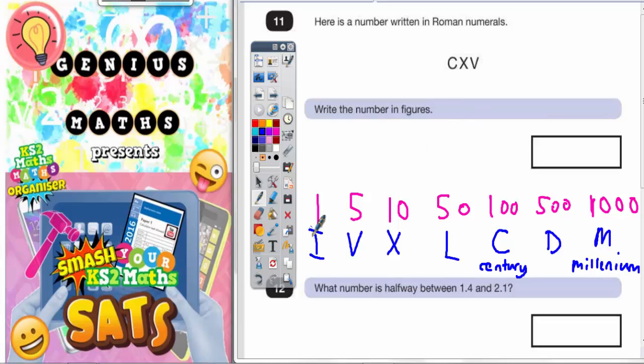So all you've got to do is learn those 7 letters and what they mean. If we think about what this C means, the C stands for 100, the X stands for 10, and the V stands for 5.